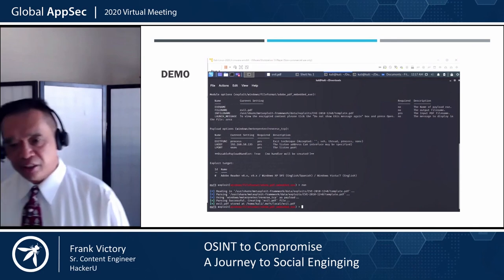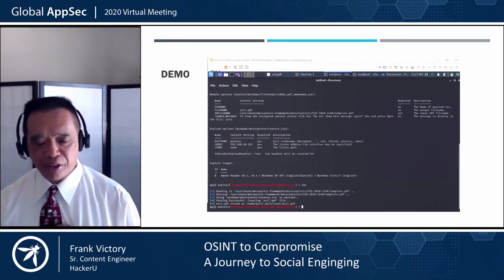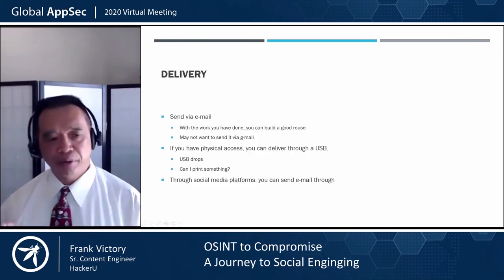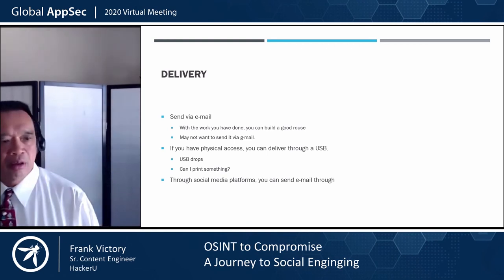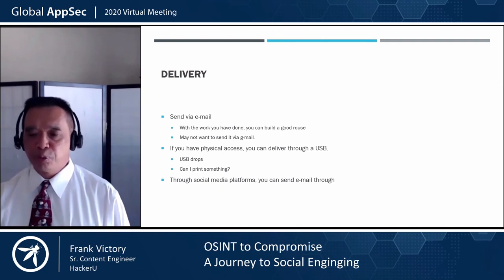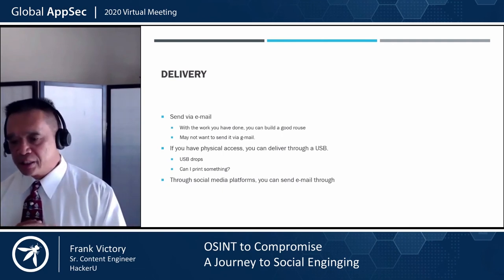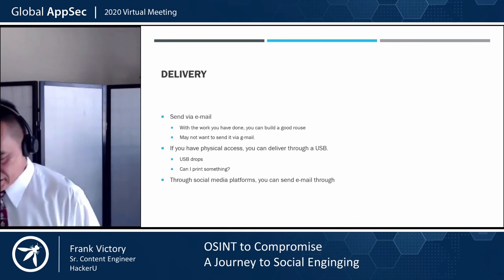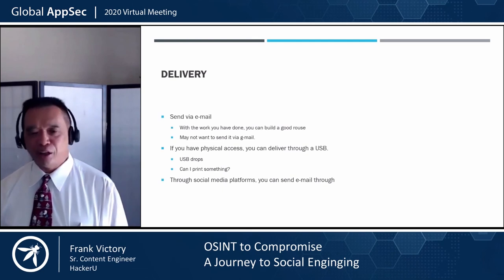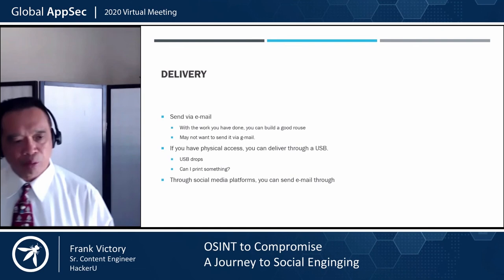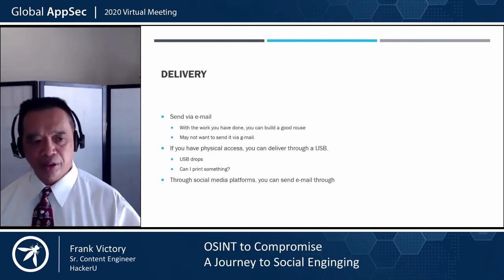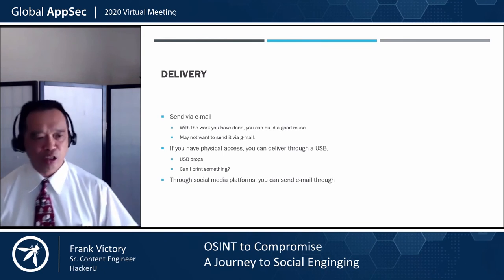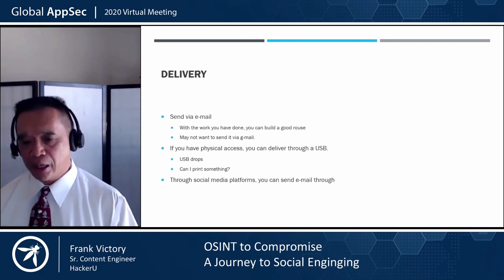I would suggest when delivering this that you change the filename from evil.pdf — I'm going to assume most users won't click on something literally called evil. How do we deliver this? We can send it via email. With the work you've done you know how to build a good ruse — we know this person is looking for financial data and they're a vice president, so they won't take a directive but may respond to something like a statement. You may not want to send it from a Gmail account, as Gmail strips out malware. In the current environment you may not have physical access, but if you do there are always USB drops, or you can ask someone to open a PDF, which initiates the malware. You can also send through social media platforms.